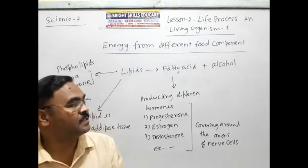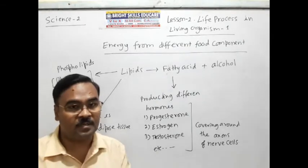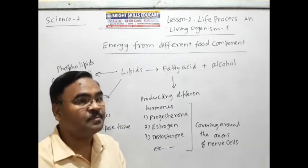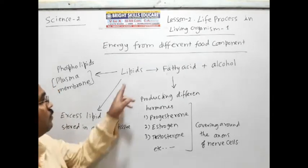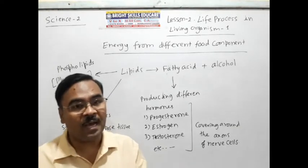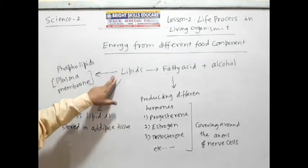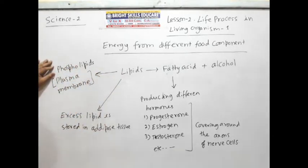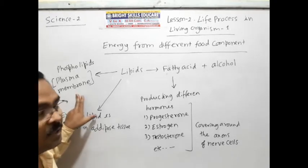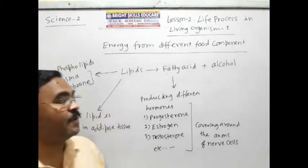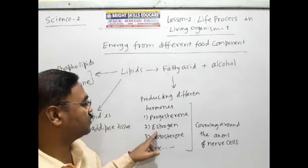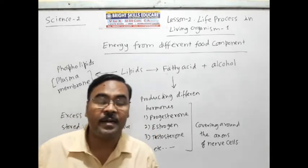There is a strong chemical bond between a fatty acid and alcohol, and it forms a lipid. Whenever we eat, the fatty acid is absorbed into the bloodstream and is converted into lipids. These lipids are very useful in our body in different ways. One type is phospholipids, which are useful for the construction of the plasma membrane. In the same way, fatty acids also produce different types of hormones — such as progesterone, estrogen, testosterone, etc. You have done it in 9th standard, types of hormones.